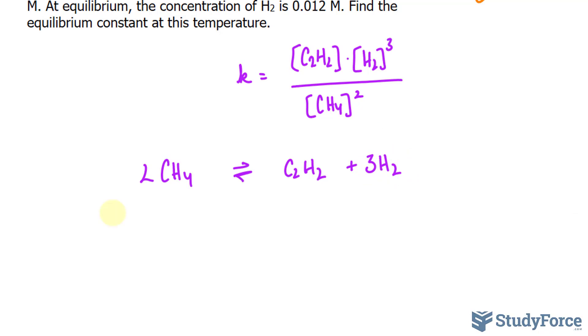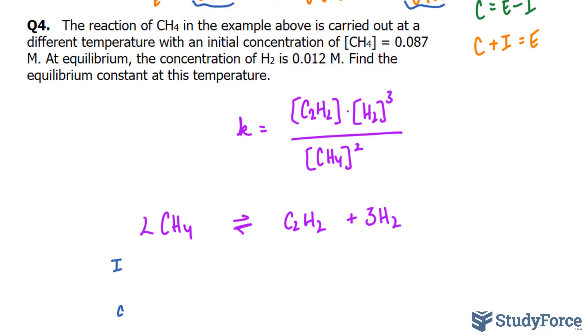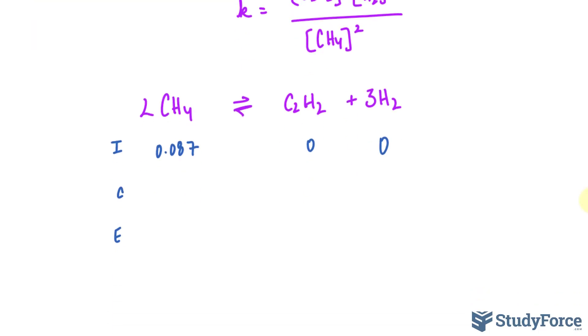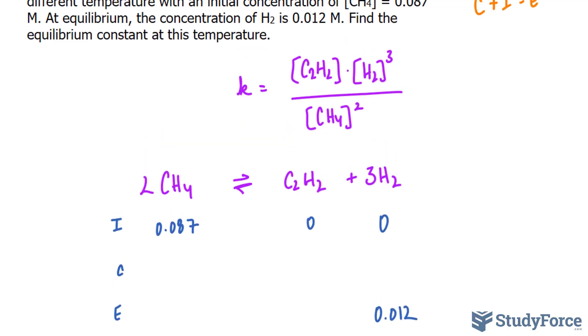Creating our ICE table, let's look at the information they've given us. The initial concentration is 0.087 and of course the concentrations of the products at the very beginning should be 0 and 0. Furthermore, we're told that the equilibrium concentration of H2 is 0.012. That being said, we can actually go ahead and change this into 0.012.